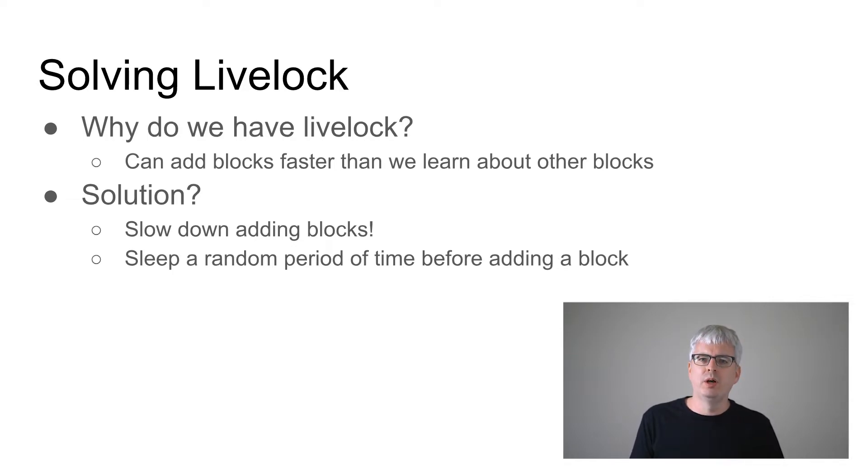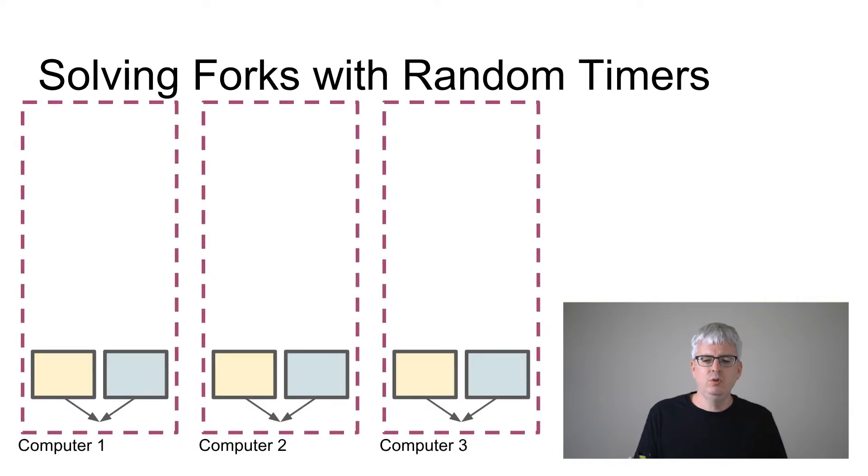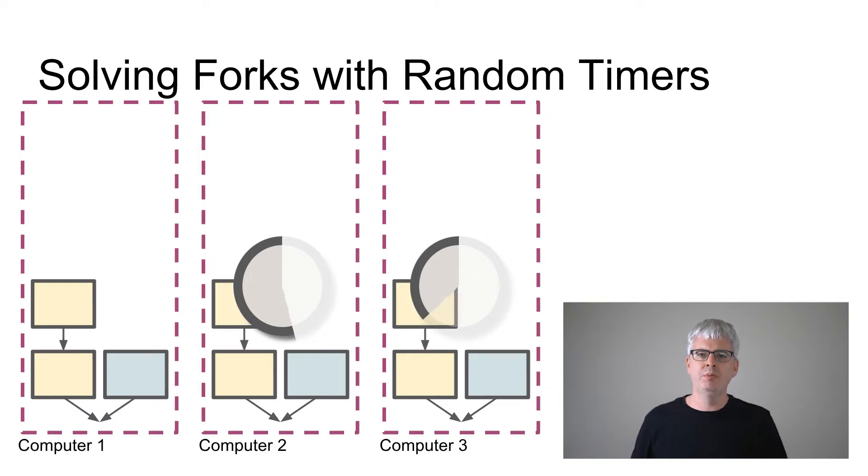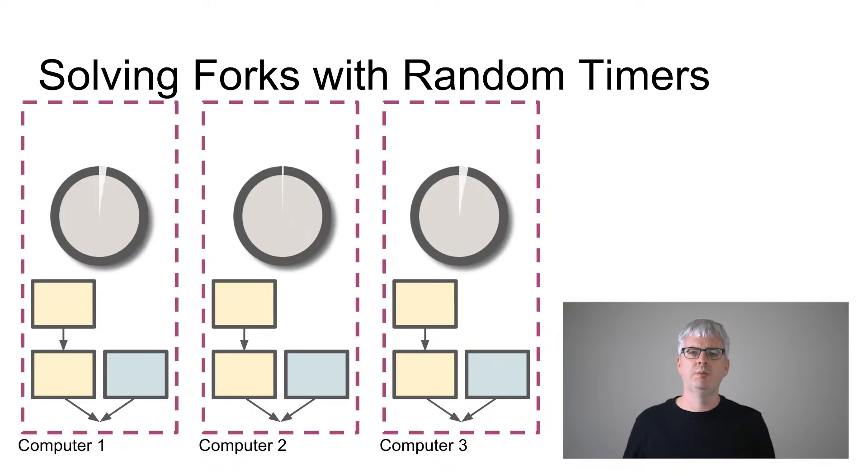So how do we do this in a principled way? Well, what we do is every time you want to add a block, you sleep a random period of time and only once your timer expires, do you add your block. Let's explain this using an example. So if all of our computers have a fork that's been communicated between them, and we want to add another block to our blockchain, instead of just picking randomly and adding a block right away, the first thing we do is we set a timer. And we just wait and wait and wait. And once our timer expires, we're allowed to add a block, so we add a block. As soon as we add a block, we tell all of our neighbors about it. And when our neighbors hear about that new block from one of their peers, they immediately stop their timers and say, wait, I've got to add this block. Now I'm going to start a new timer and wait again.